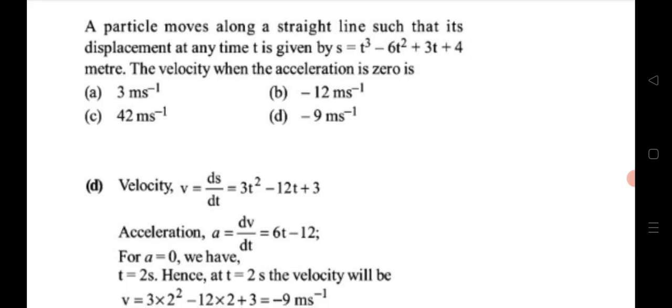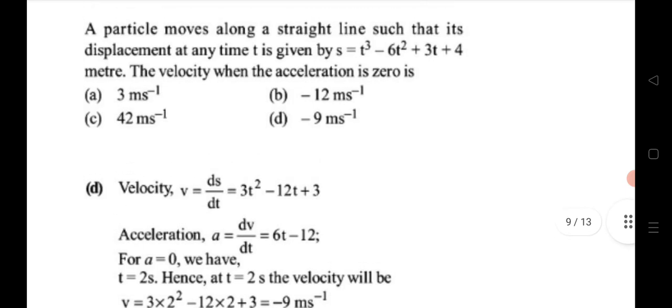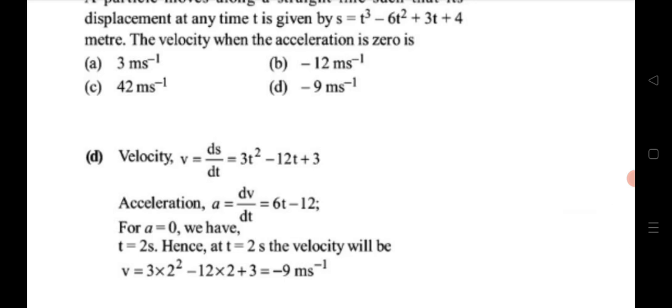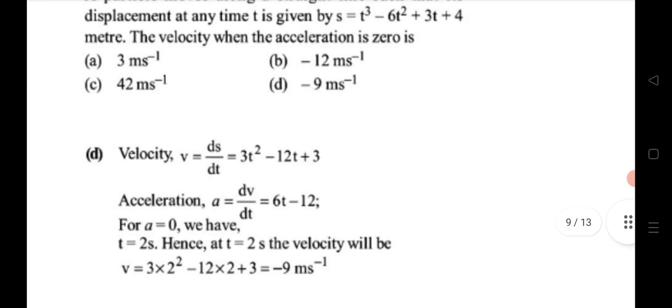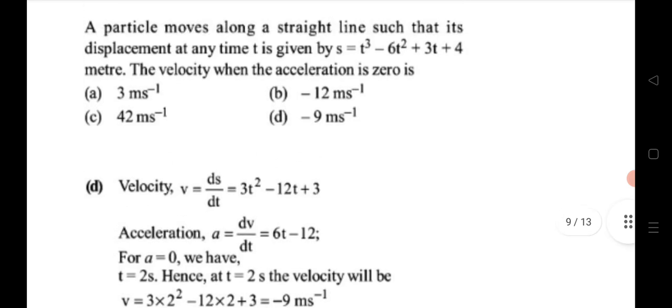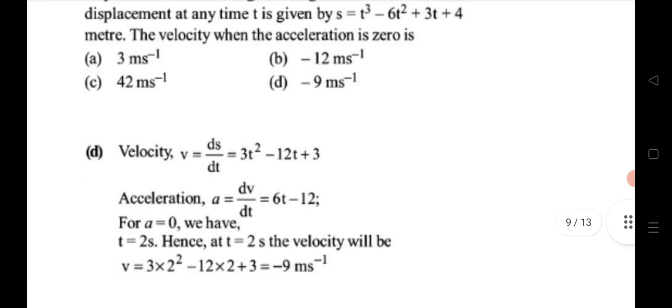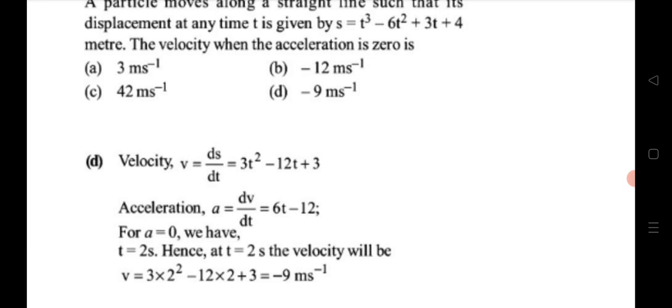Fifteenth question: a particle moves on a straight line with displacement given as a function of time. Find the velocity when acceleration is zero. Use velocity = ds/dt — differentiate to get velocity, e.g., 6t − 12. For acceleration, use a = dv/dt. Set acceleration to zero: 6 − 12t = 0, giving t = 2 seconds. Substitute t = 2 into the velocity expression to get the answer.